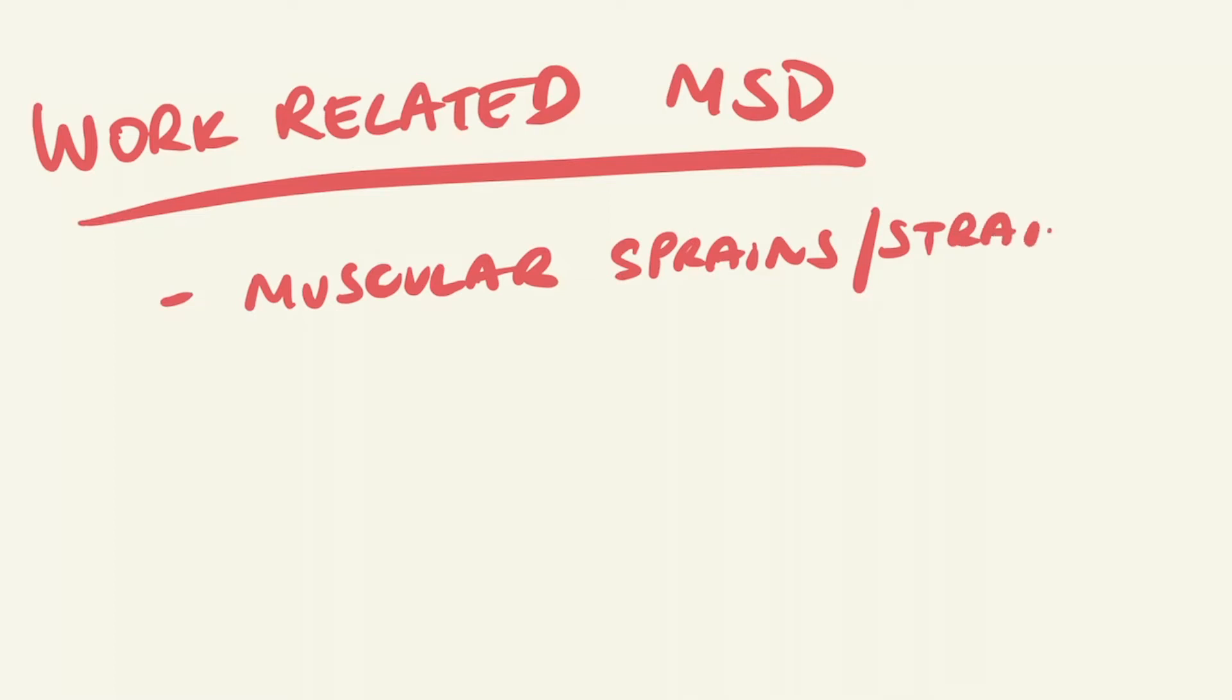Examples of work-related MSDs include muscular sprains and strains, injuries to the back or joints such as the shoulder, elbow, knees, and hands.